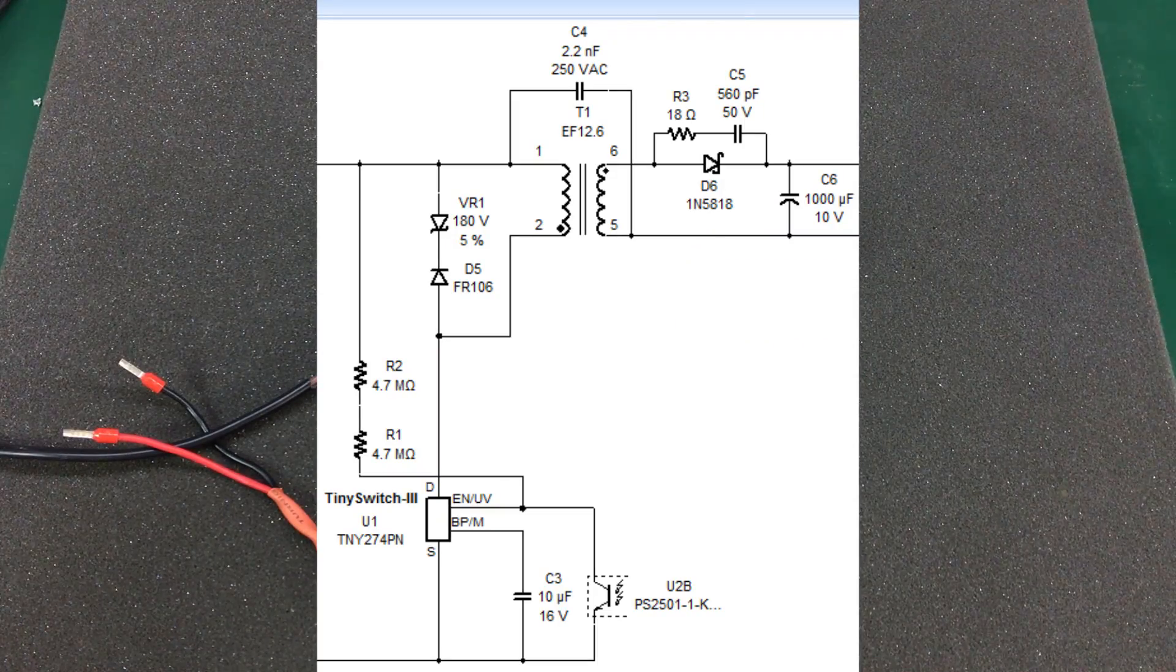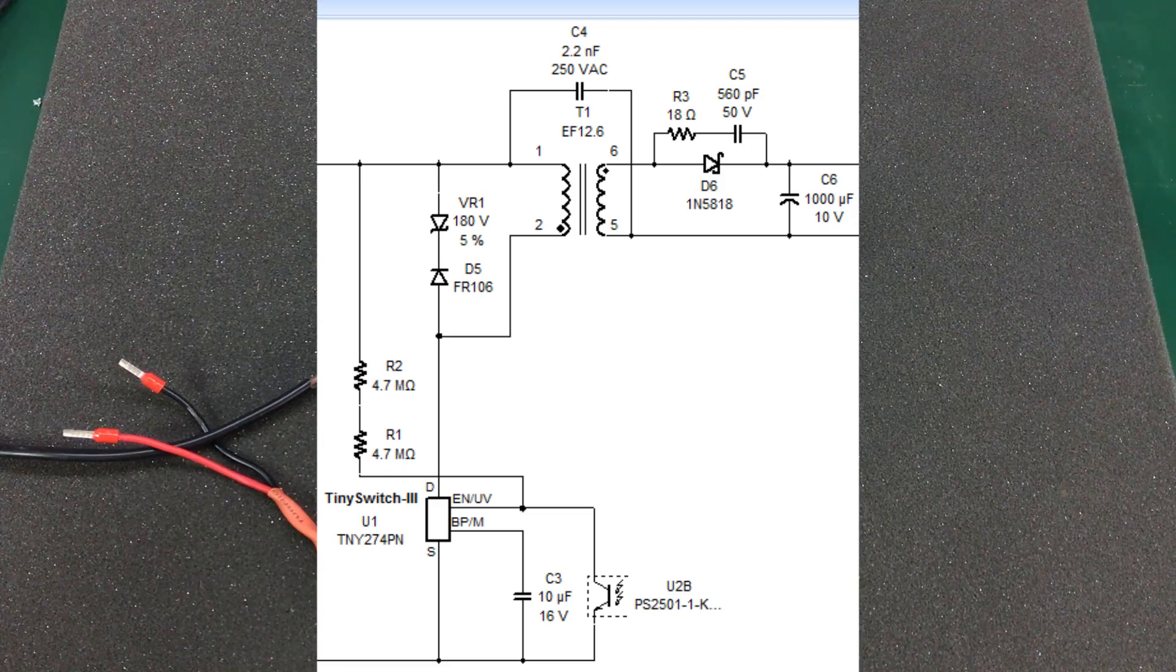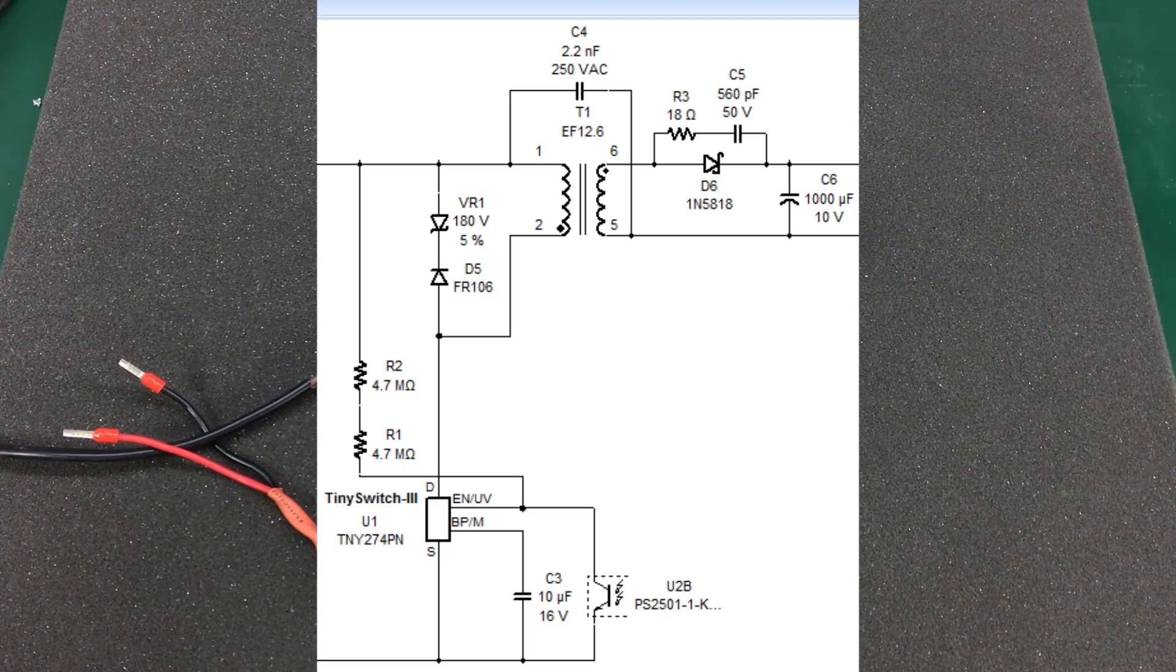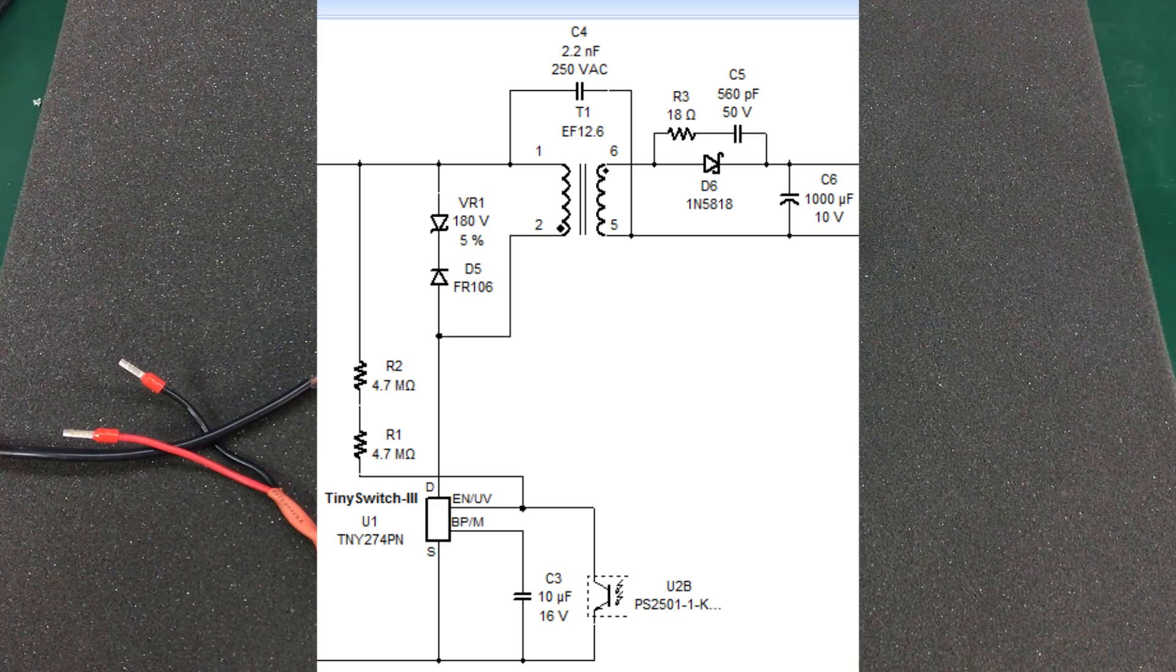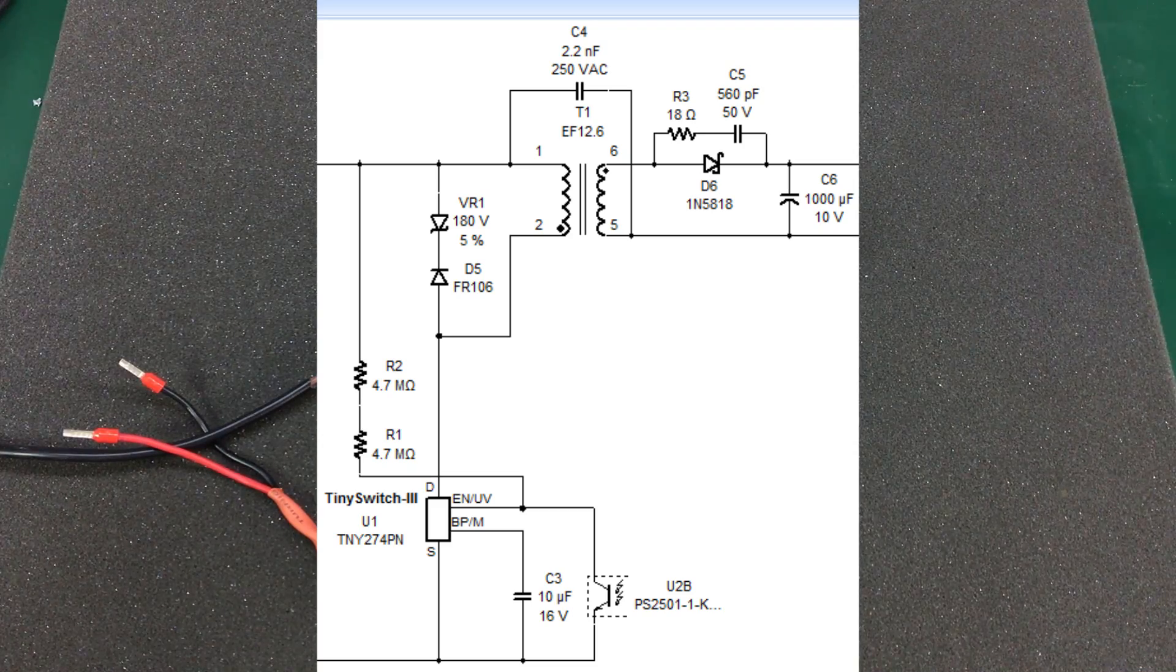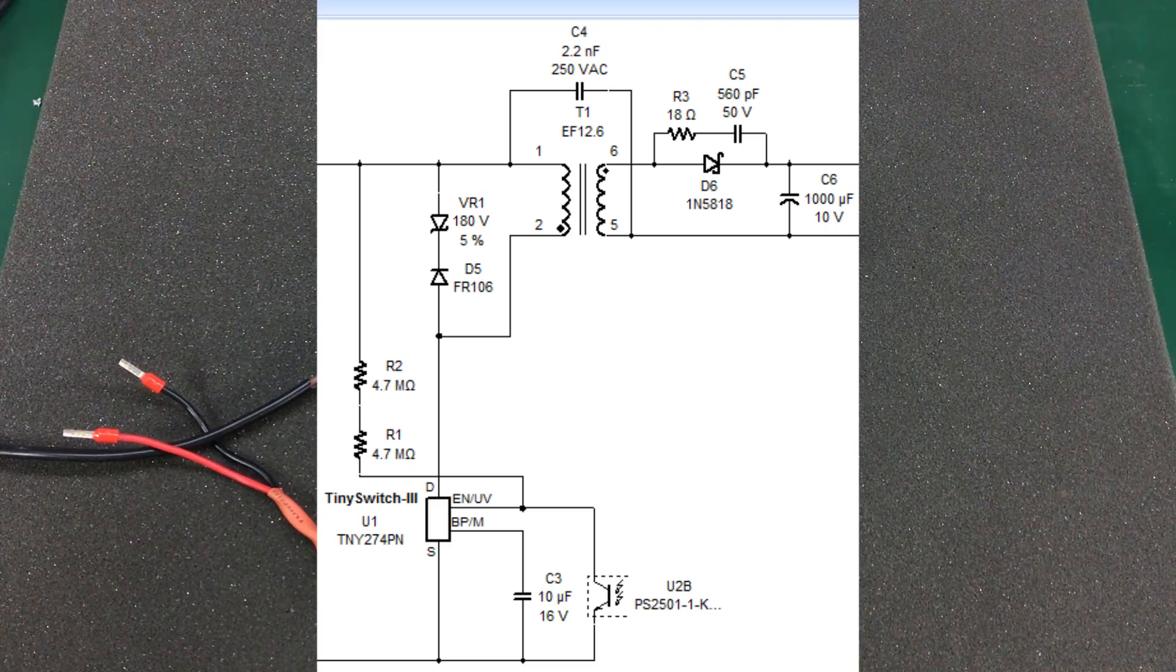Start of primary winding goes to MOSFET drain, that is the negative rail, and the start of the secondary goes to the anode of the diode. Once again, this is all in the datasheet of the control IC.